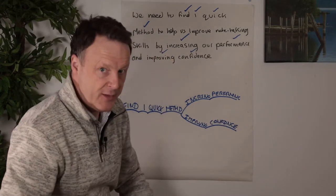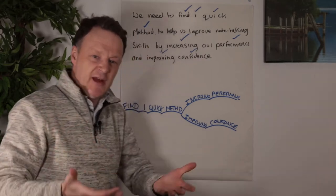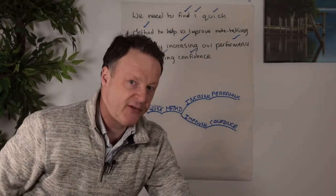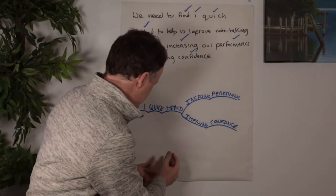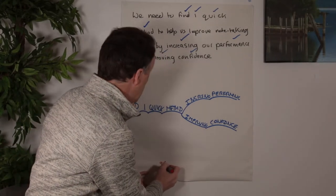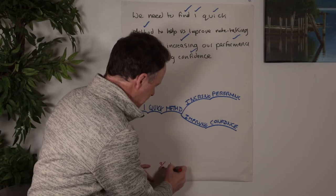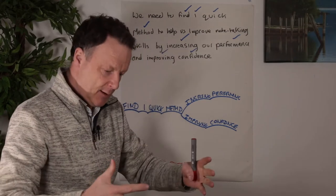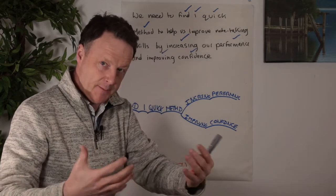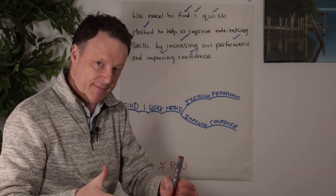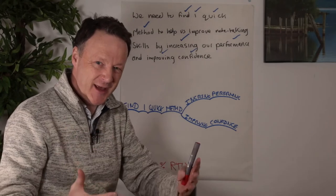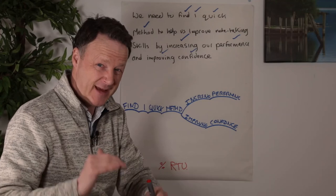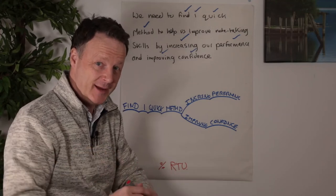Now the reason this is a game changer is because this increases my real-time understanding. So it increases another crucial percentage, which is percentage RTU. Now that means that my understanding of what I'm harvesting is at a much higher level, but I'm also able to see it on one page. Combine the two, that's incredibly powerful. And that's how it's really easy to improve note-taking skills.